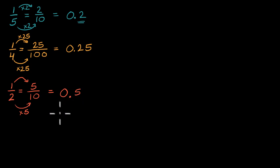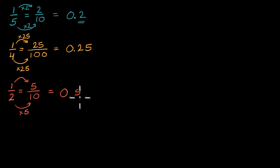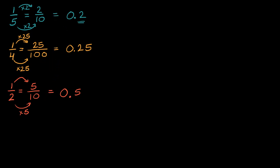Why is this useful? You're going to see these fractions show up a lot in life, and you'll need to go both ways: if you see 2 tenths or 20 hundredths, be able to immediately recognize that's 1/5; 25 hundredths is 1/4; 1/2 is 0.5; and 0.5 is 1/2. And it's not just useful for these three fractions — it's useful for things that are multiples of them.